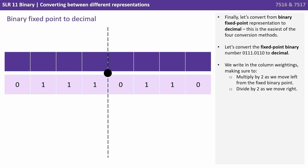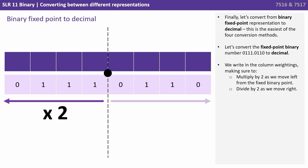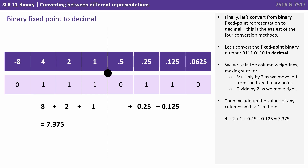Finally, let's convert from binary fixed point representation to decimal — the easiest of the four methods. Converting 0111.0110: we write in the column weightings, multiplying by 2 moving left and dividing by 2 moving right from the binary point. We then add up the values of all columns with a 1 in them: 4 + 2 + 1 + 0.25 + 0.125 = 7.375.